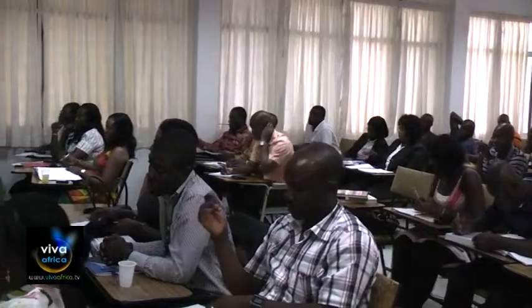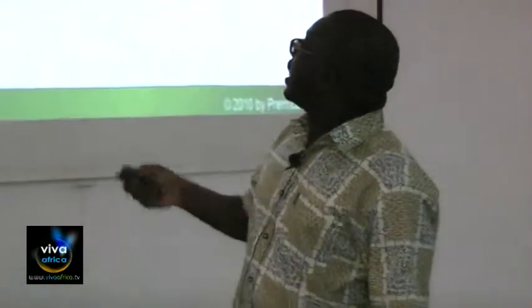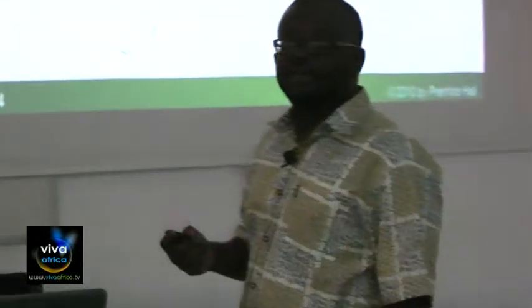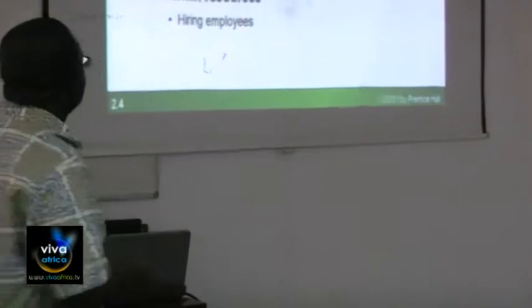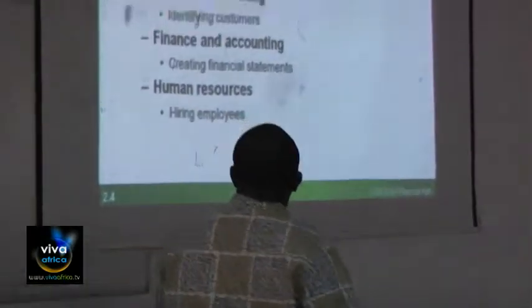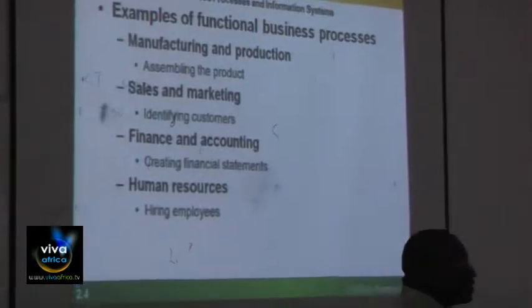We talked about the fact that in organizations, systems can be applied to different departments for different processes. Sometimes departments use standards of one another. For example, you can have systems used in production, systems used in sales and marketing, systems used in finance and accounting, and systems used for managing human resources.